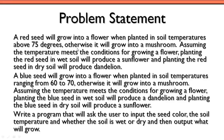We have a red seed, and we're told that this red seed will grow into a flower when planted in soil temperatures above 75 degrees. So we've got to be above 75 to get a flower. Otherwise, it will grow into a mushroom.